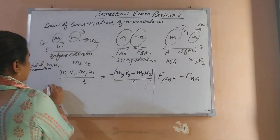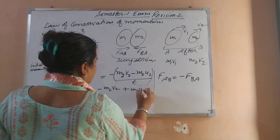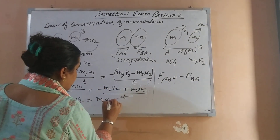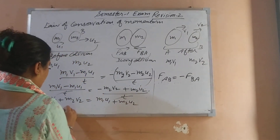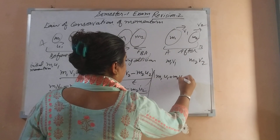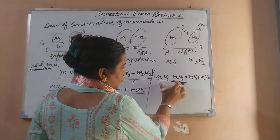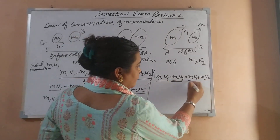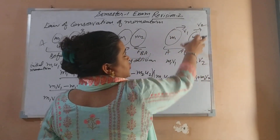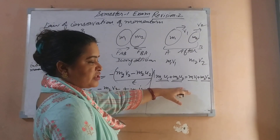So the final equation is: M1U1 + M2U2 = M1V1 + M2V2. This means the total initial momentum of the two bodies before collision equals the total final momentum after collision. This is your Law of Conservation of Momentum equation.